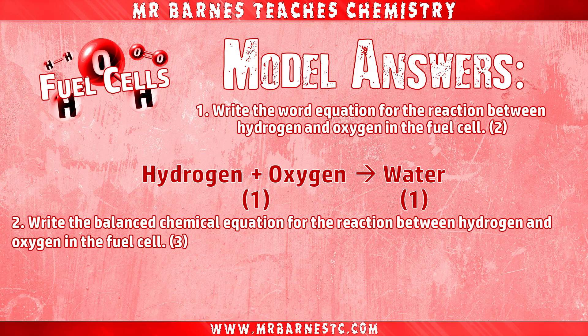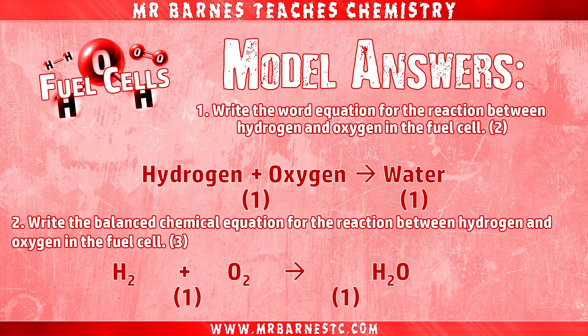Question two — writing the balanced equation. Hopefully you remember that hydrogen goes around in pairs so it's H2, and so does oxygen so it's O2. Putting those two in for your reactants gets you your first mark. Then what do they form? Water, which we all know is H2O — that's your second mark. And then finally your third mark is for the balancing: we have only one oxygen on the right and two on the left, so I'm going to double my water, giving me four hydrogens on the right, so all I have to do is put a two in front of my H2 on the left, giving me my balanced equation for three marks.